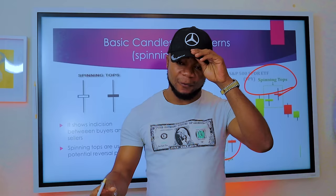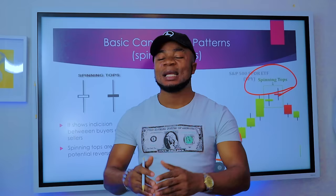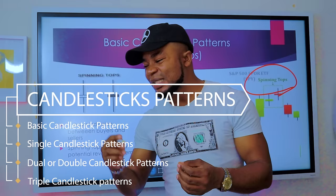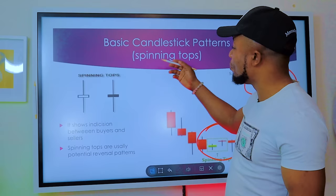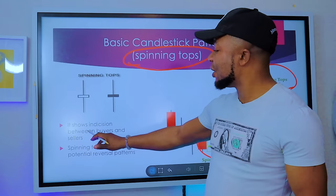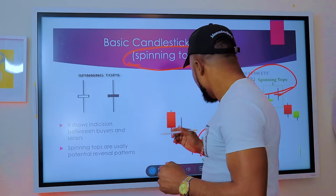By the end of this episode — the candlestick bible — we will have covered four different types of patterns. One or a combination of these patterns gives you the ability to buy or sell a particular currency pair. The first type is what we call basic candlestick patterns. Under basic candlestick patterns, the first one is what they call the spinning top, which shows indecision between buyers and sellers and is a potential reversal pattern.